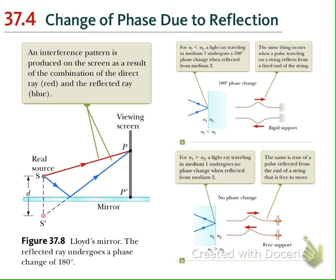This is maybe the most important topic in this chapter. You can have the interference pattern from reflection also. There is an experiment performed more than a hundred years ago by a physicist named Lloyd, and we call this the Lloyd's Mirror experiment.